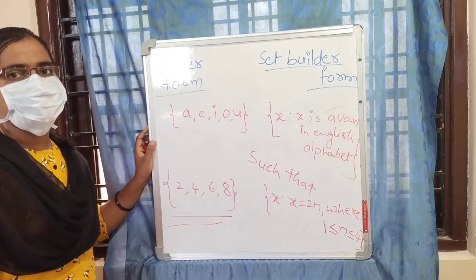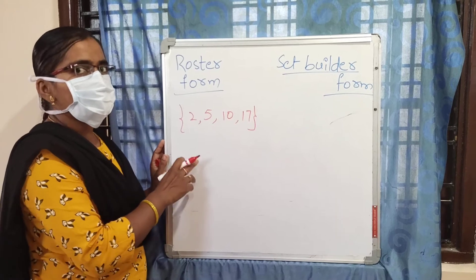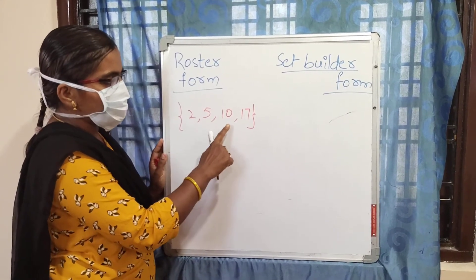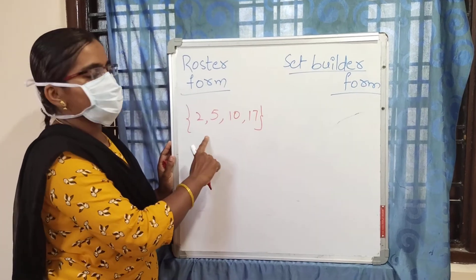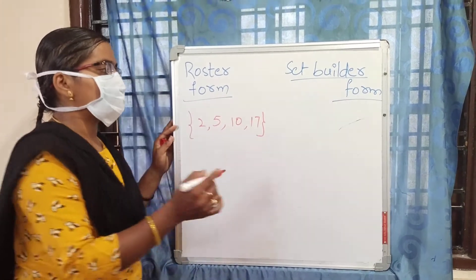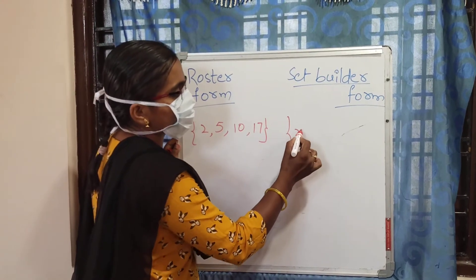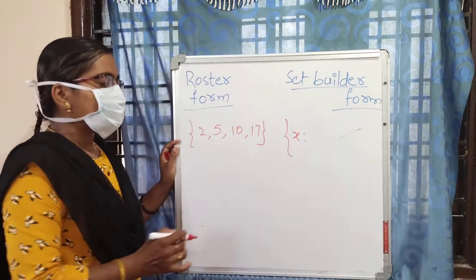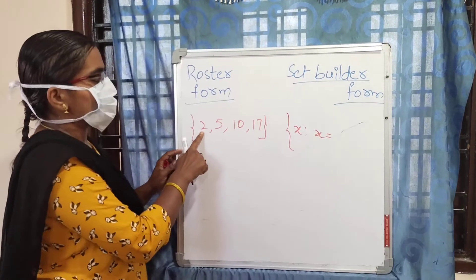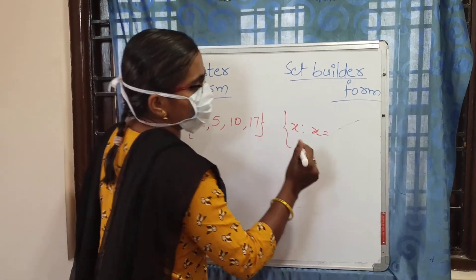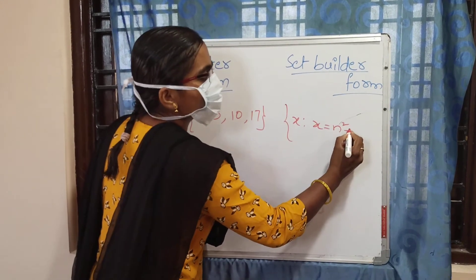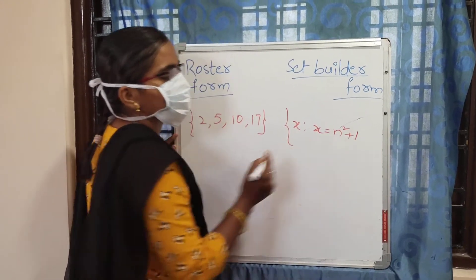We will see some more examples. Here is one more example. A set in roster form is: {2, 5, 10, 17}. Just convert it into set builder form. Simply write: x such that x equals N² + 1.